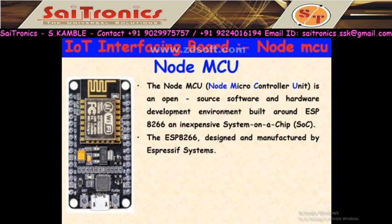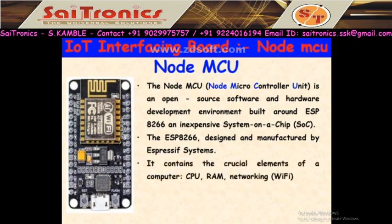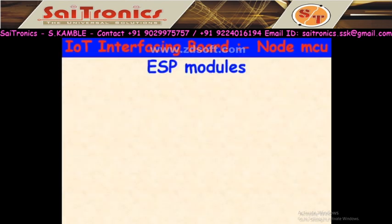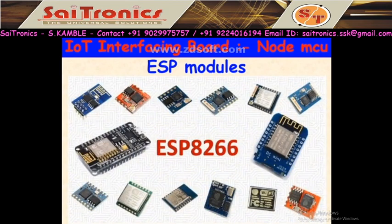The ESP8266 is designed and manufactured by Espressif Systems. It contains crucial elements of a computer like CPU, RAM, networking, and Wi-Fi — all inbuilt — therefore it is the ultimate choice for IoT projects. In NodeMCU we are using ESP models. There are many ESP models; a standalone ESP8266 can be connected to Arduino for IoT. The ESP model is embedded on the Arduino board to form the complete NodeMCU.